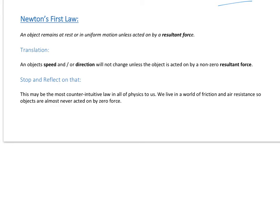That means if something's traveling at 10 meters per second, it will keep going at 10 meters per second forever unless it's acted on by a force. As humans, this makes no sense — in a car, if you take your foot off the accelerator, you slow down. That's because we live in a world where we have friction and air resistance. But without those forces, you'd go at 10 meters per second in the same direction forever, which is pretty crazy, but that's what Newton's first law says, and we've never found anything to go against it.